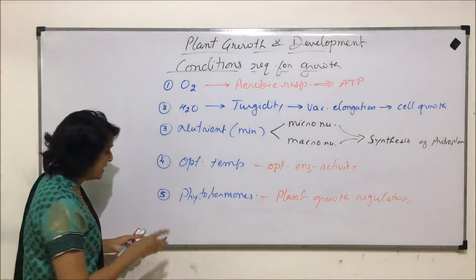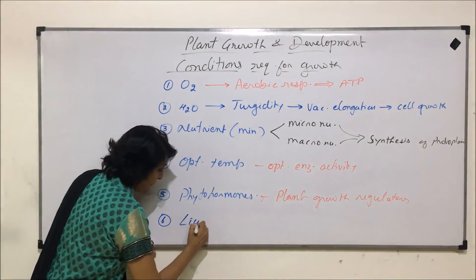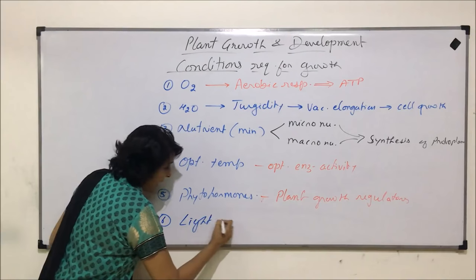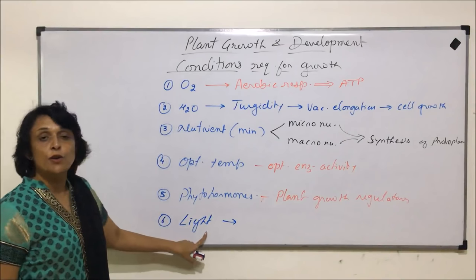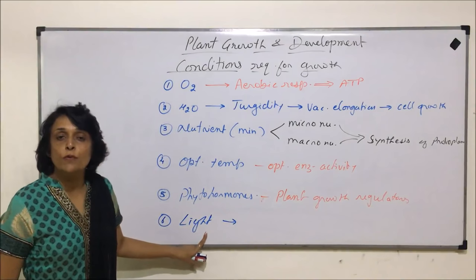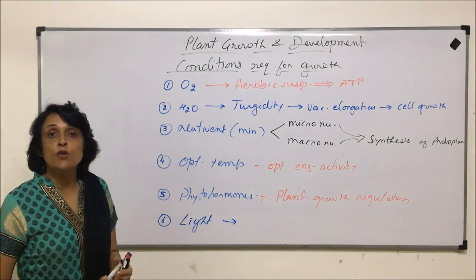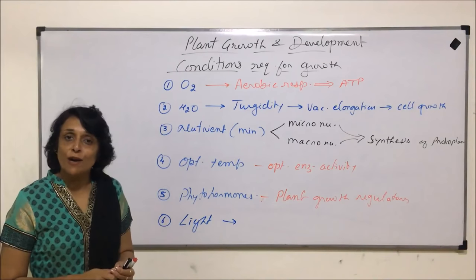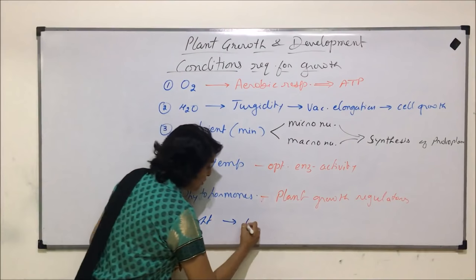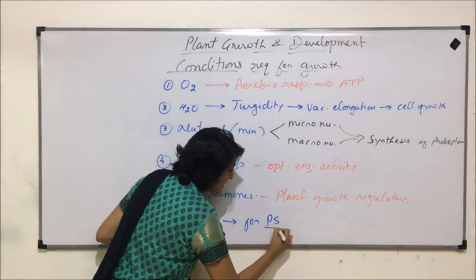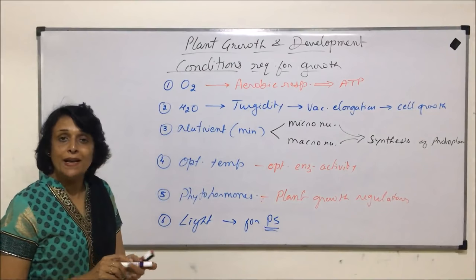The next condition which is essential for growth is light. Unless light is present, plants will not be able to perform photosynthesis, and if there is no photosynthesis, no carbohydrates will be synthesized. So light is a very essential factor for plant growth.